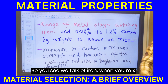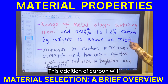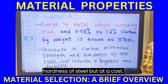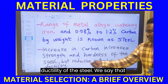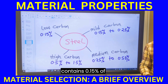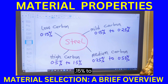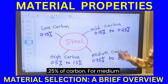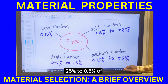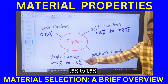When you mix iron with other elements and purify it, it becomes steel. The addition of carbon increases the strength and hardness of steel, but reduces its toughness and ductility. Low-carbon steel contains up to 0.15% carbon; mild steel contains 0.15% to 0.25% carbon; medium steel contains 0.25% to 0.5% carbon; and high steel contains 0.5% to 1.5% carbon.